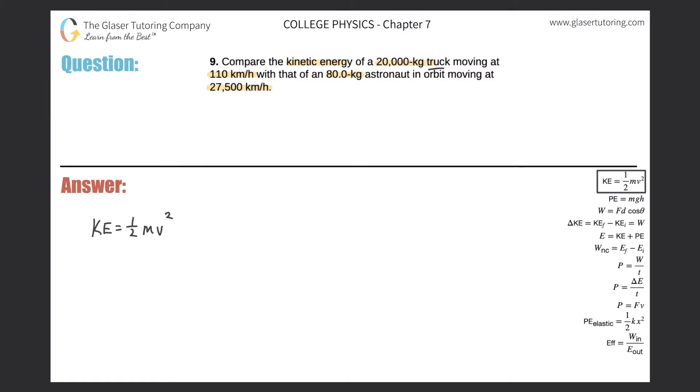So let's first take a look at the truck. The truck has this mass, 20,000 kilograms, so that's fine. But notice its speed is in kilometers per hour, so we just got to do a little conversion. Alright, so let's just get that out of the way. So 110 kilometers per hour, kilometers go on the bottom, meters on the top. I know that there are 1,000 meters in one kilometer, so that's done.